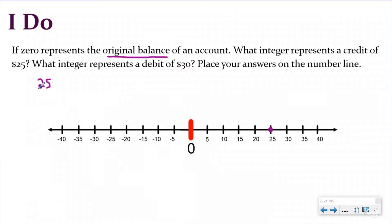Remember, I don't need to write a positive sign by my 25 because if it's not negative, we make the inference that it is positive. So our keyword here was credit.